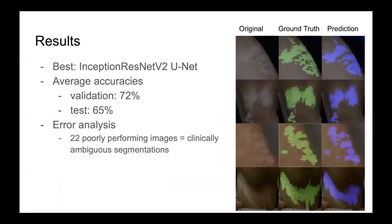Ultimately, our best performing model was an Inception ResNet V2-based U-Net. On average, our validation set accuracy was 72% and our test set was 65%. We would expect that kind of lower score based on how small our dataset was. On the left-hand side you can see the output of our model: the left column is the original natural image, the middle is the ground truth overlaid on the prediction image — Jeslyn's tracings in green — and the right-hand side in purple is the segmentation that the model outputs when given just the original image. To see where our model was going wrong, we performed error analysis, taking the 22 most poorly performing images — defined as below 65% accuracy — and found that many had clinically ambiguous segmentations.